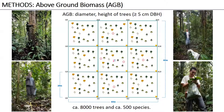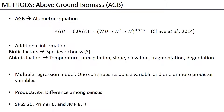To get our values of biomass, we are using allometric equations. We are contrasting this information with different predictor variables. We have biotic variables and abiotic variables like species richness, temperature, precipitation, and degradation.